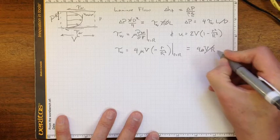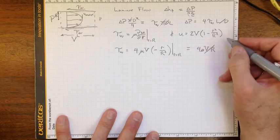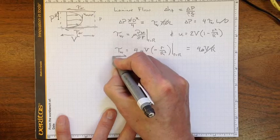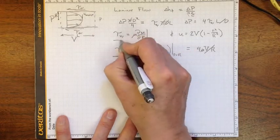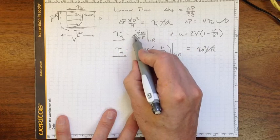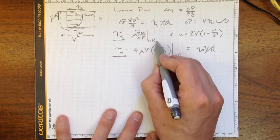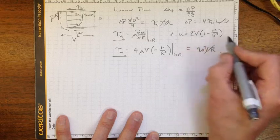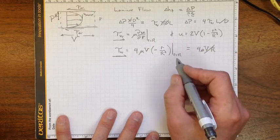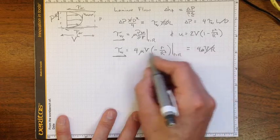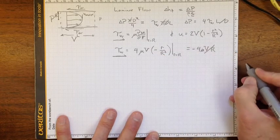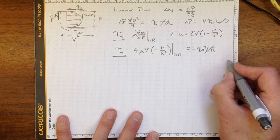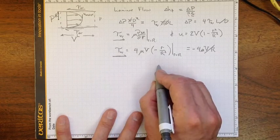And we'll pick up a negative sign, but wait a minute. If we're interested in tau wall in that direction, that's equal to mu du/dr at r equals R. So we're going to wind up with u equal to this, that's correct, and tau wall will wind up with negative here, negative four mu v over r. What that means is it's actually positive acting in this direction, or negative in the positive x direction.